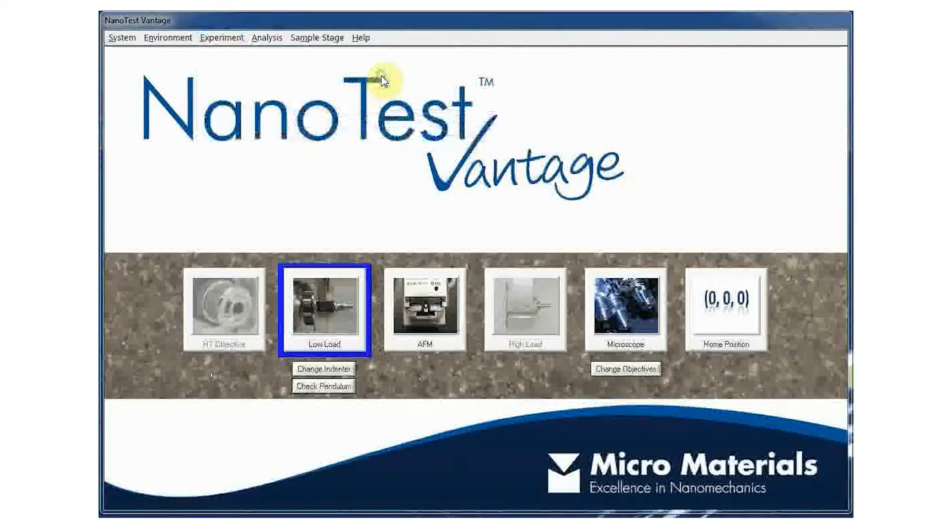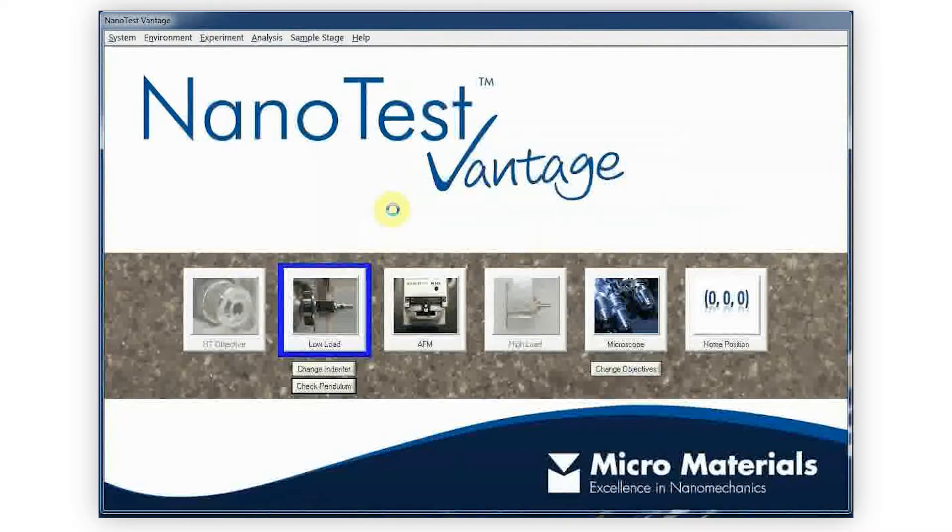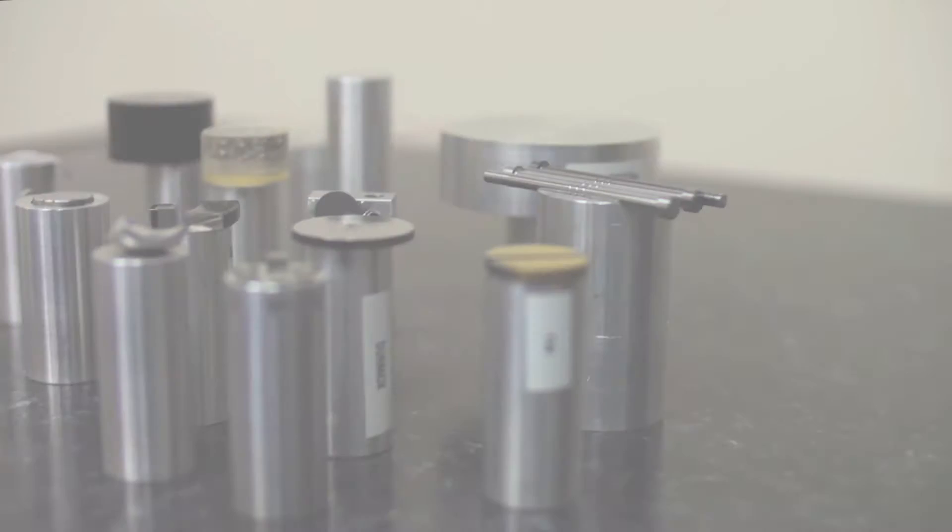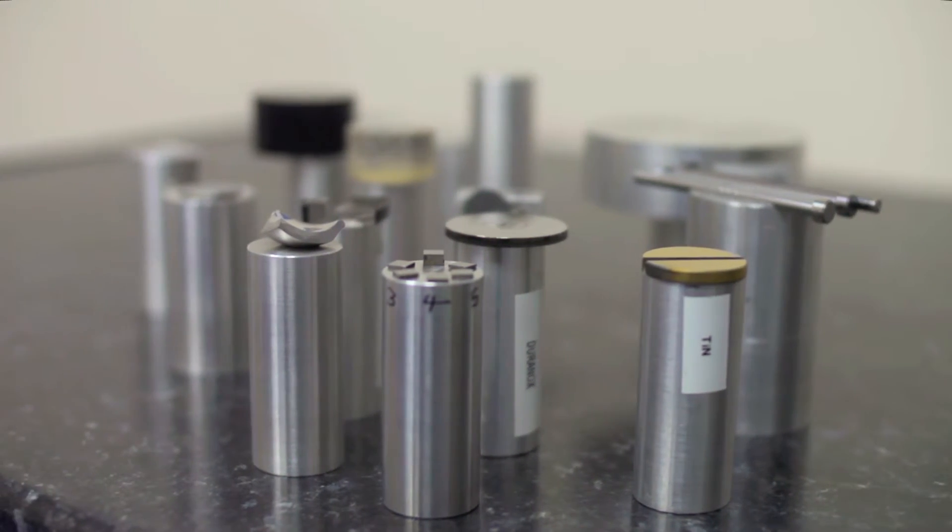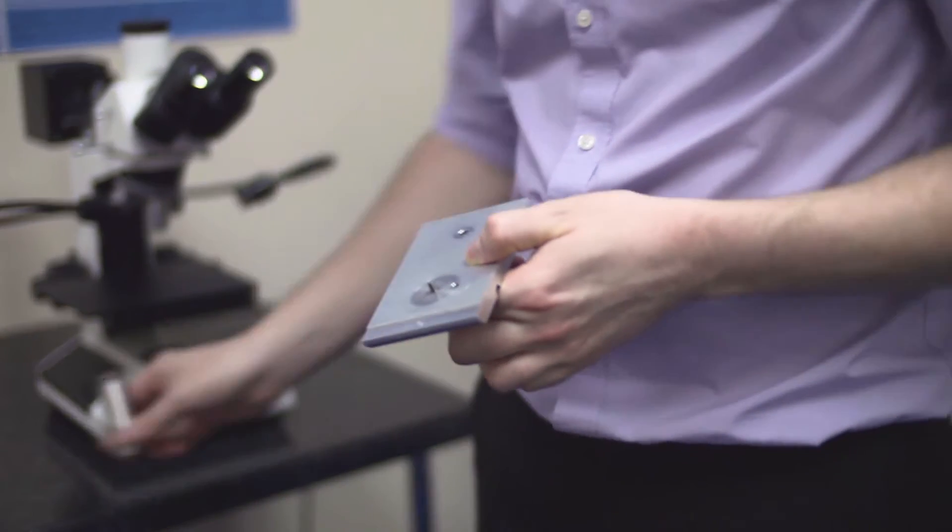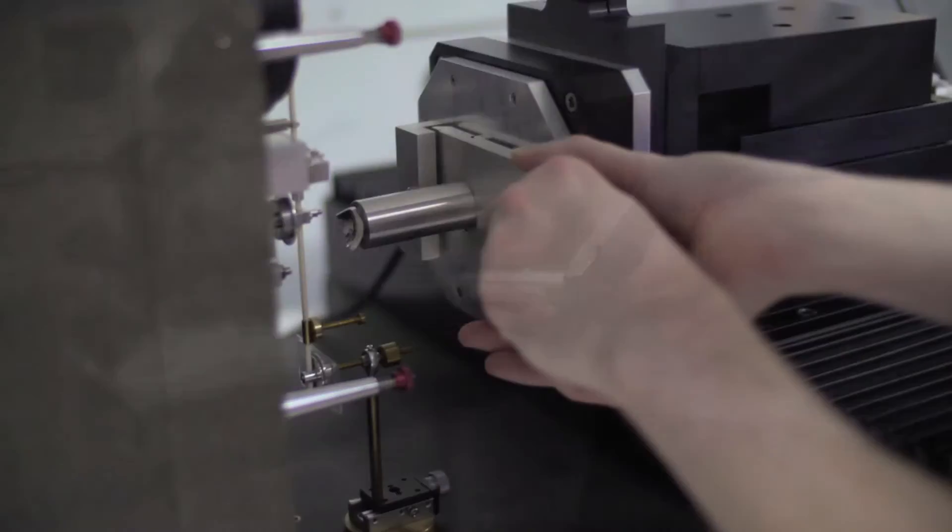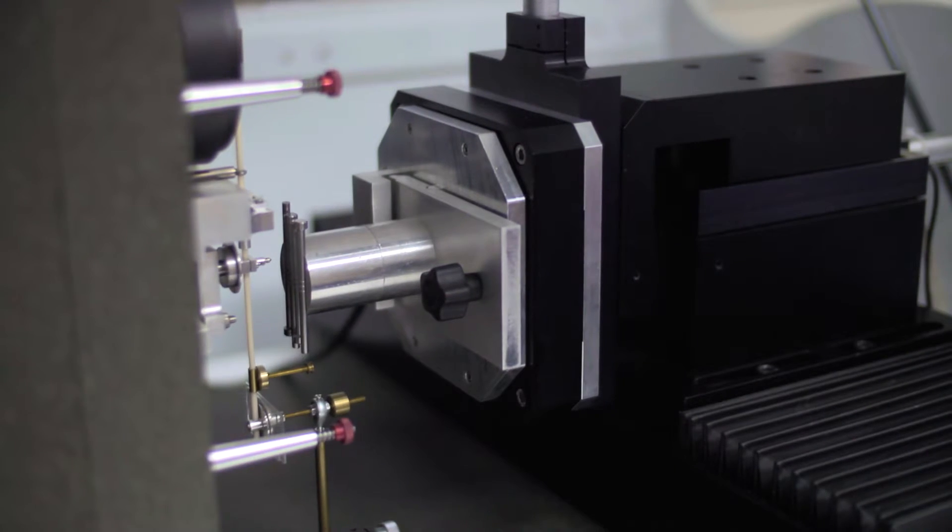In addition, commonly used experimental parameters can be exported and recalled later to save time when setting up schedules. A huge variety of sample shapes and sizes can be tested on the instrument, thanks to its open-platform design. This includes samples that are very large, concave or convex in shape, and samples with high surface roughness.